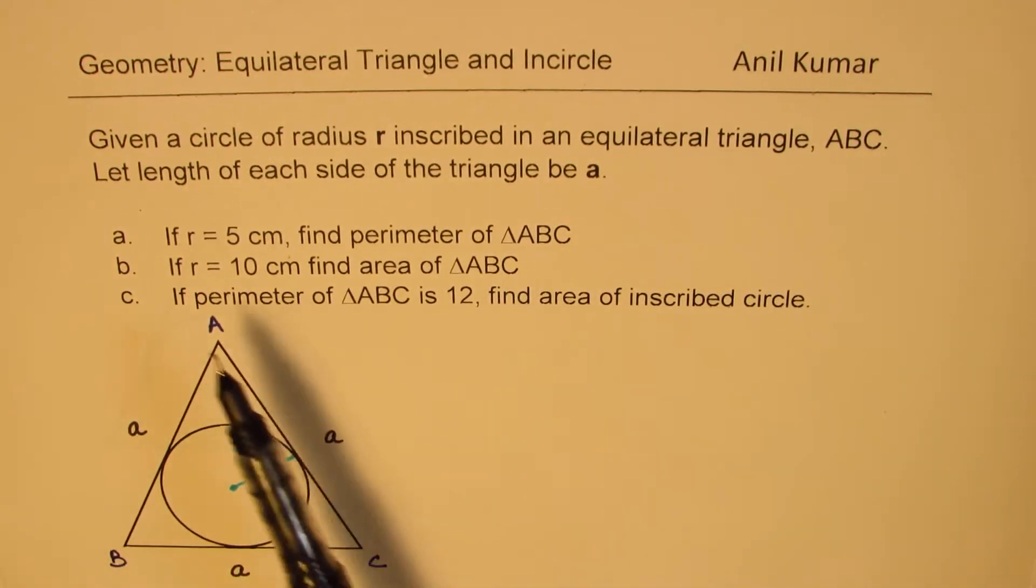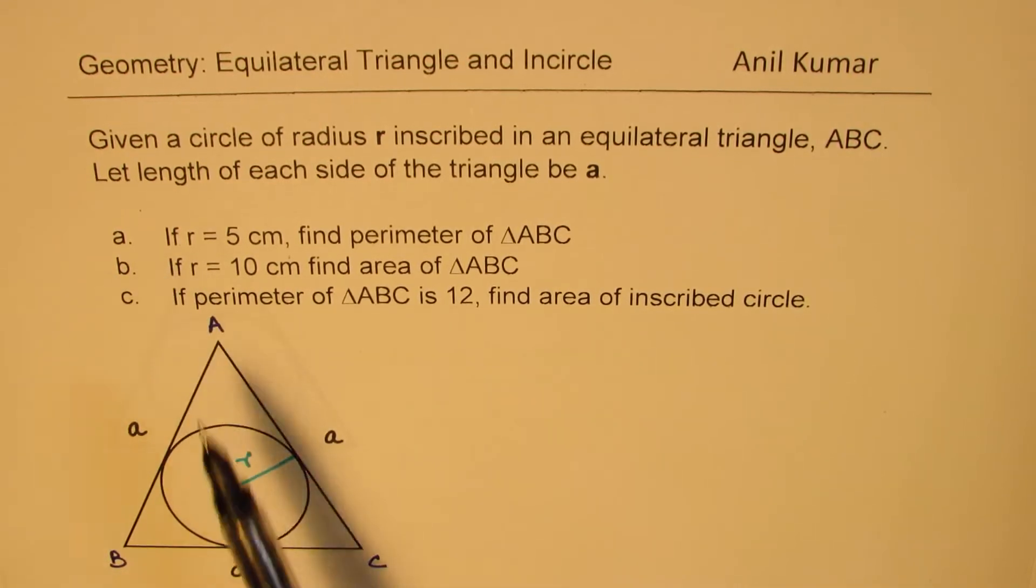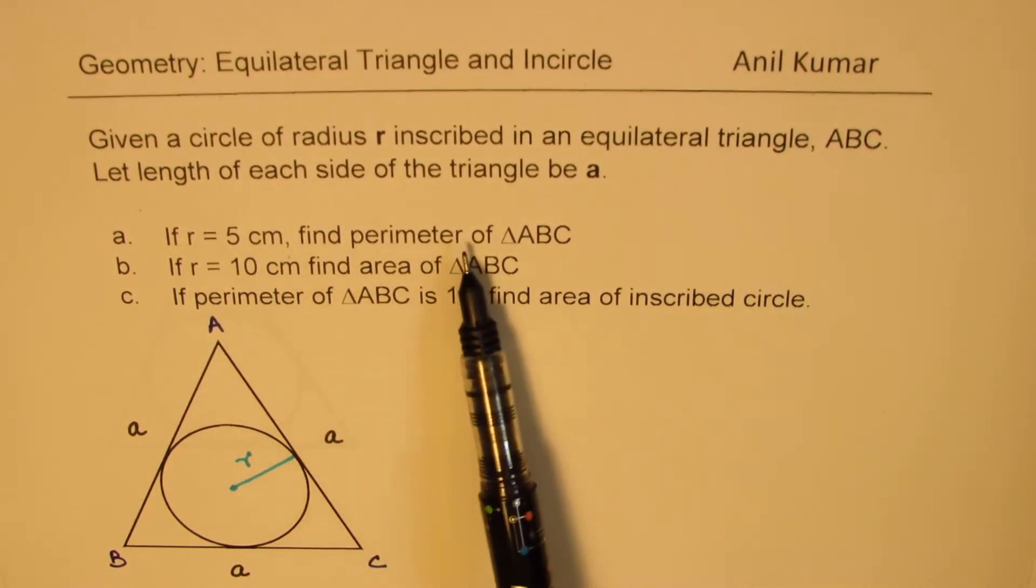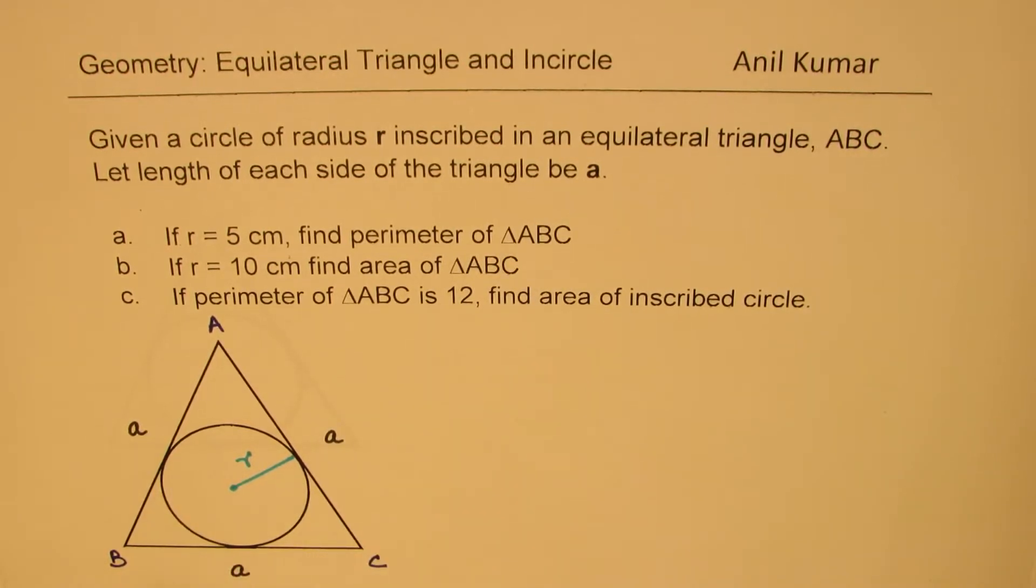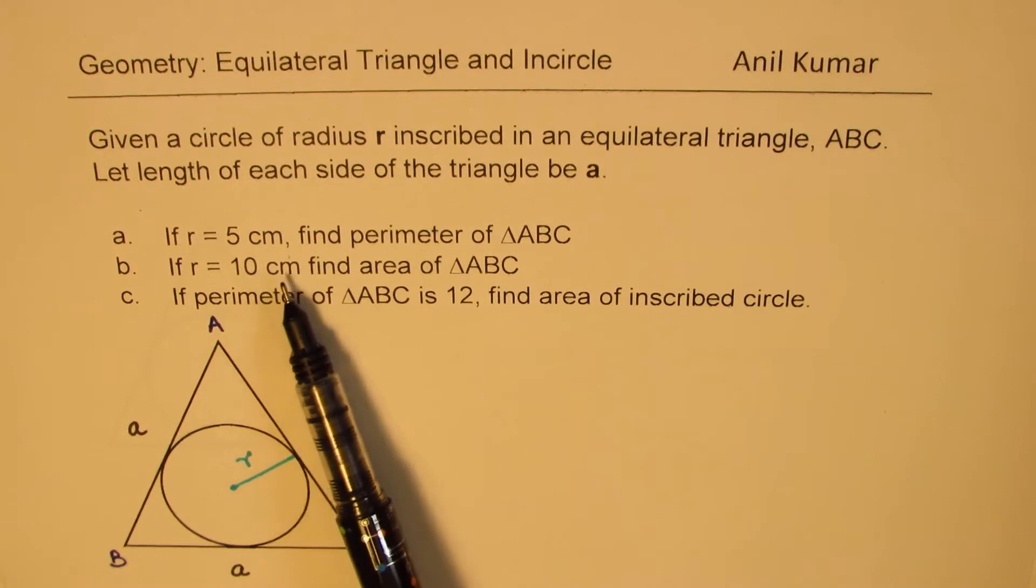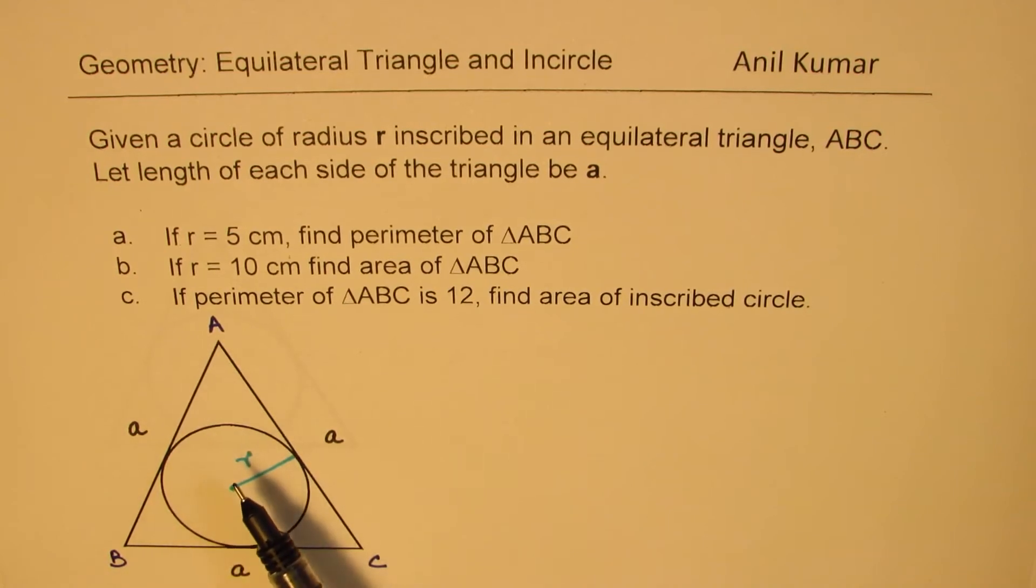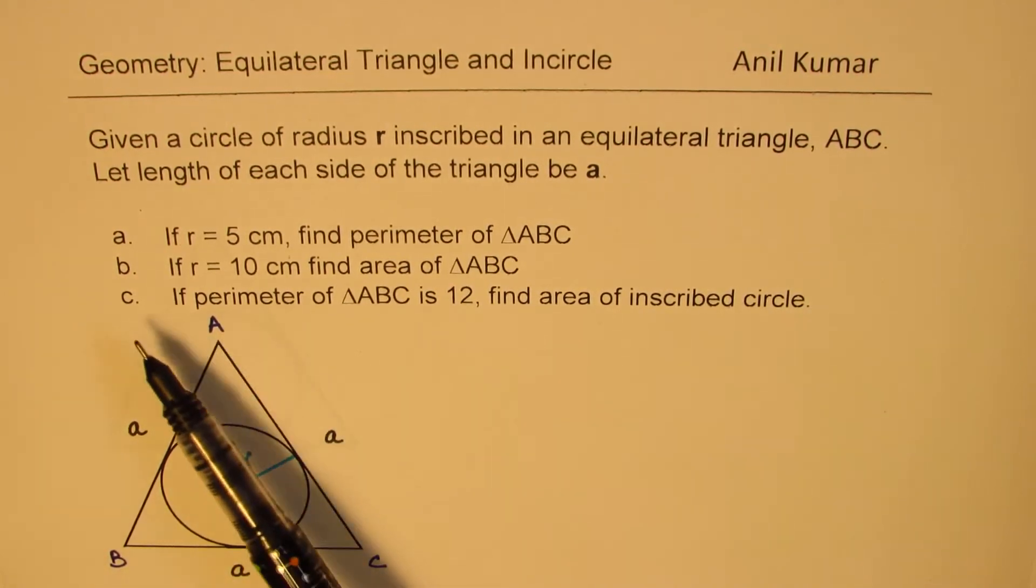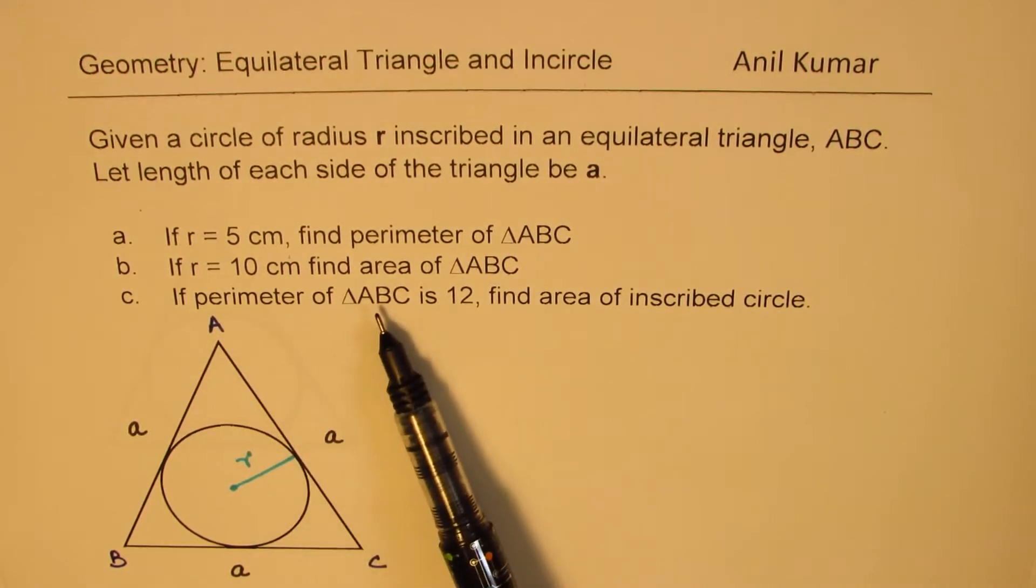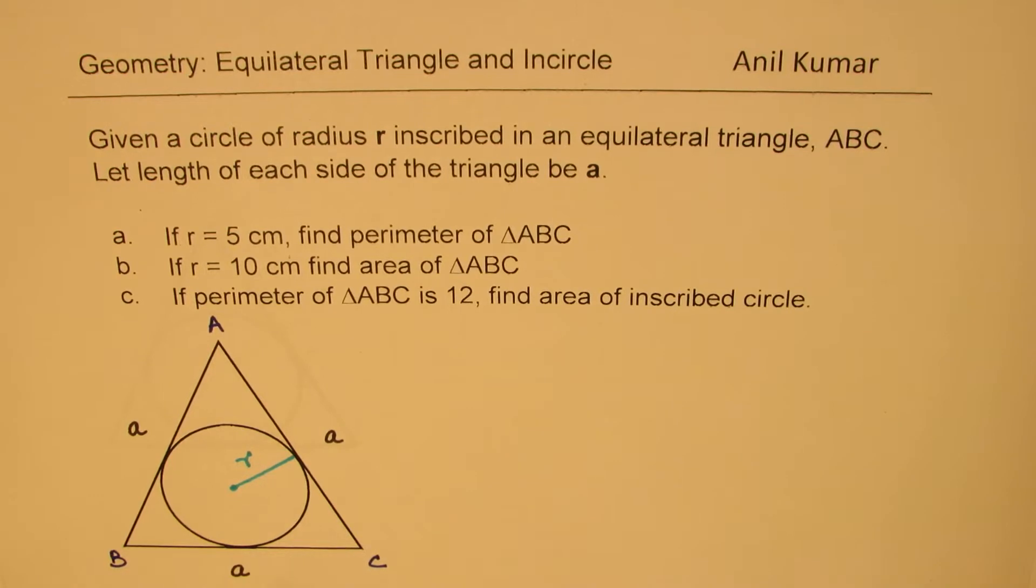The questions are typically of this form: (a) If r = 5 cm, find the perimeter of triangle ABC. (b) If r = 10 cm, find the area of triangle ABC. For that, you need a as well as the height. (c) If the perimeter of triangle ABC is 12, find the area of the inscribed circle. These are the kinds of questions you normally see in test papers involving equilateral triangles and inscribed circles.